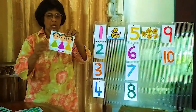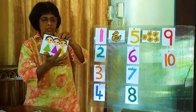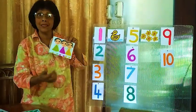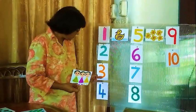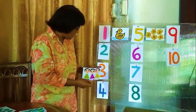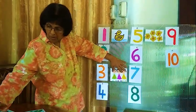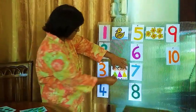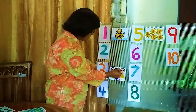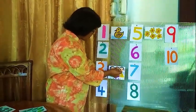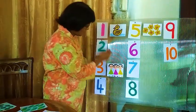Now what about this? 1 girl, 2 girls, 3 girls. Is this correct? Yes! This is number 3. So we will paste it here — number 3, 3 girls.